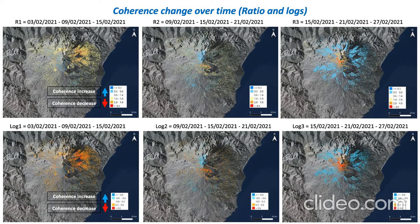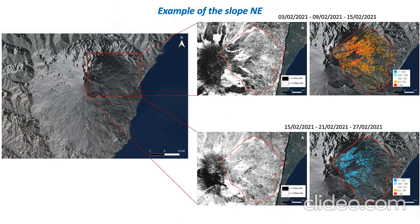As you can see, the more we go ahead in time, the more we see changes in coherence on the surface. For example, in the crater and center area we have a lot of coherence decrease, and progressively as we go to the slopes around the crater we have a huge increase of coherence, both in the ratio and in the logs. In the northeastern slope especially, we see a complete change of the surface coherence — going from a decorrelated part to a part with a really high coherence increase.